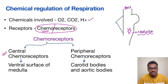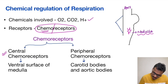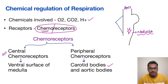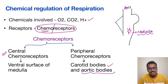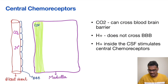Coming to the peripheral chemoreceptors, they are called the aortic and carotid bodies. The aortic bodies are located in the arch of aorta, and the carotid bodies are located at the bifurcation of the carotid. Those are their locations.